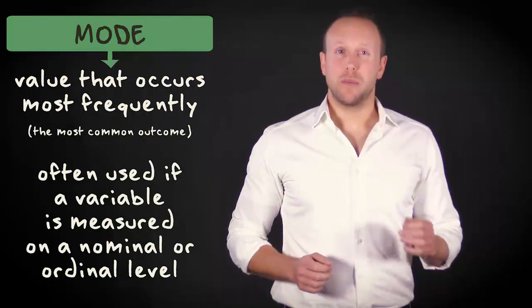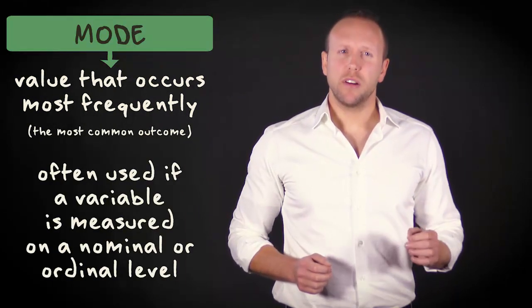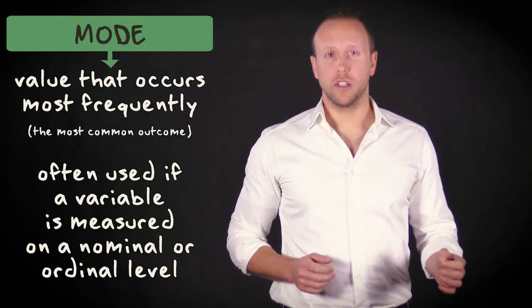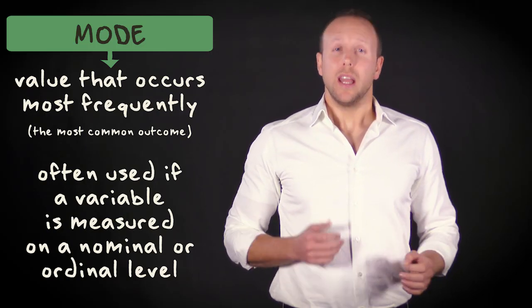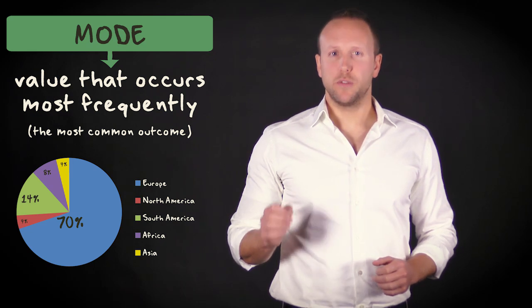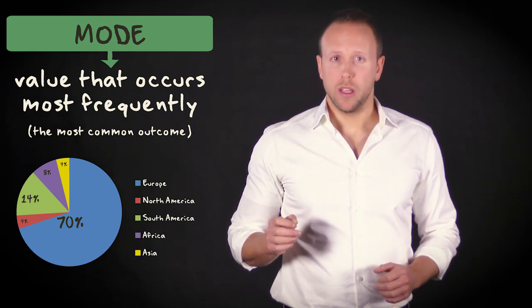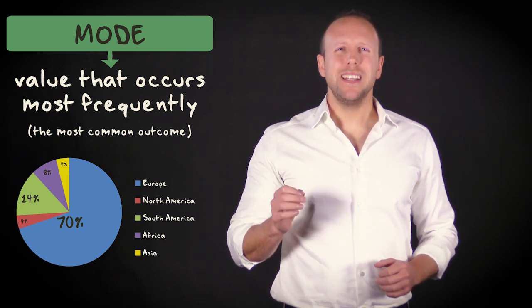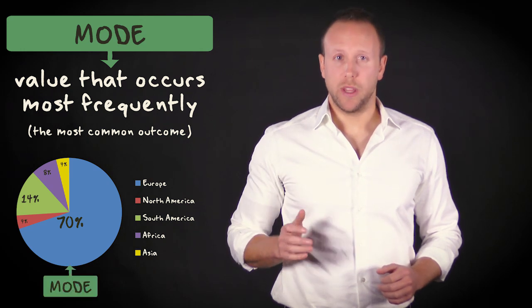The mode is often used as a measure of central tendency if a variable is measured on a nominal or ordinal level. In this pie chart, you can see which continent players in the main Spanish football competition come from. The pie chart makes immediately clear what the mode is. It is Europe.